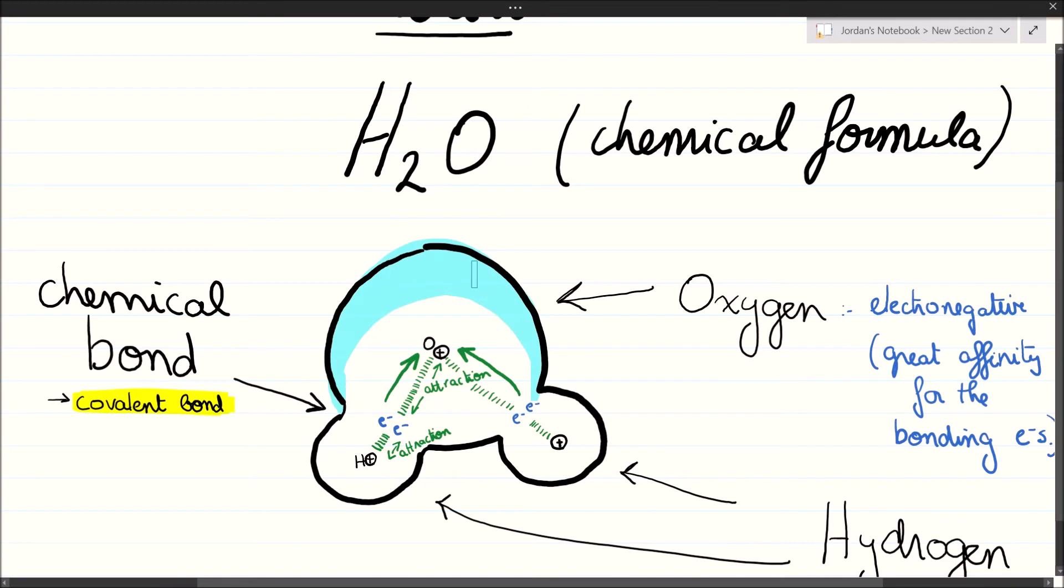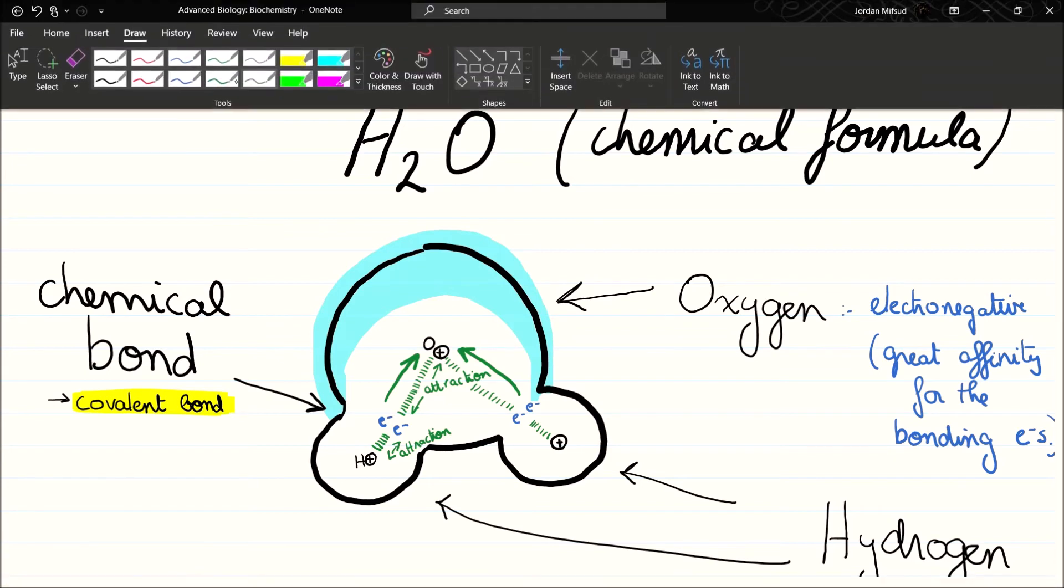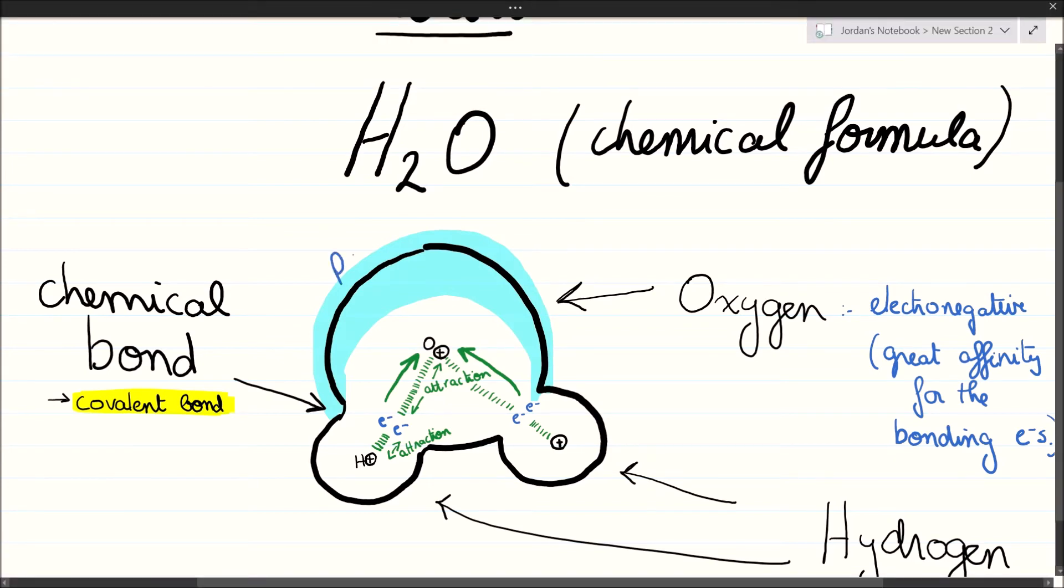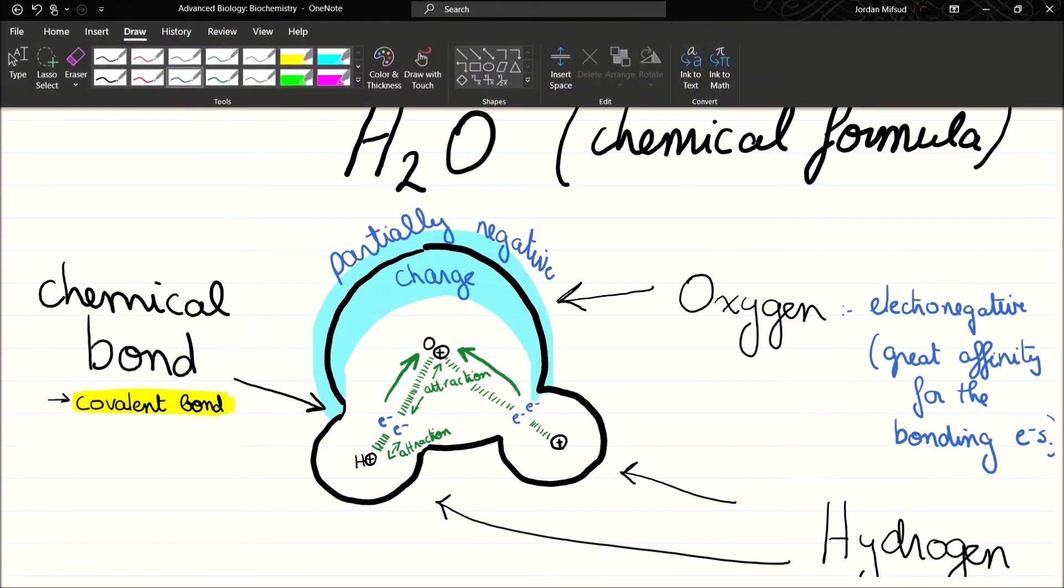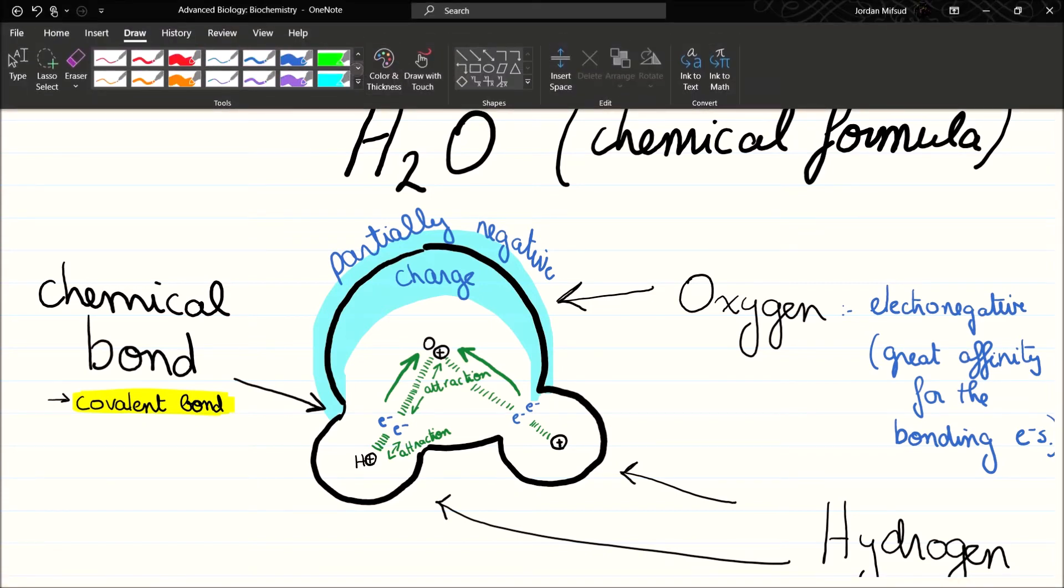We say that it has great affinity for the bonding electrons. So given the unequal attractive force, the unequal love these two atoms have for the bonding electrons—the electrons that they are supposedly sharing—most of the time the electrons are closer to the oxygen atom than to the hydrogen. Electrons are negatively charged.